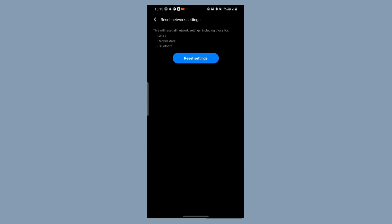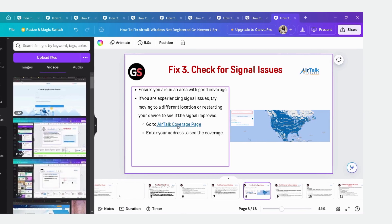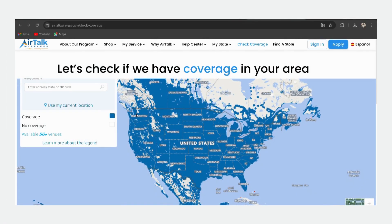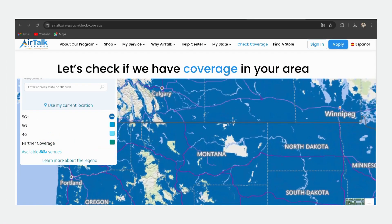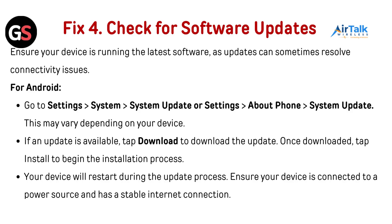Fix 3: Check for signal issues. Ensure you are in an area with good coverage. If you are experiencing signal issues, try moving to a different location or restarting your device to see if the signal improves. Go to the AirTalk coverage page — you can go directly through the link provided in the description of this video. Enter your address to see the coverage.